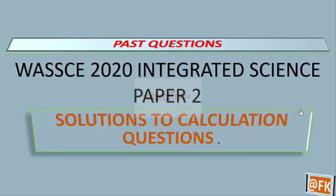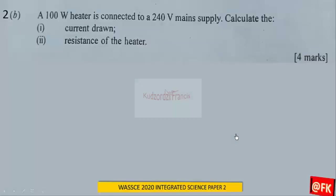This is the 2020 Integrated Science Paper 2 solutions to calculation questions. Let's start with question 2b: a 100-watt heater is connected to a 240-volt mains supply. Calculate the current drawn.